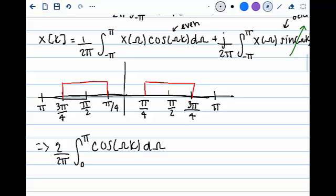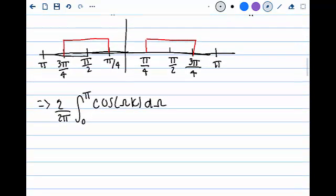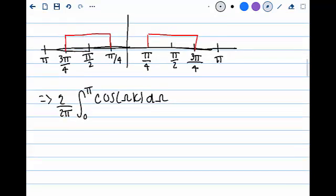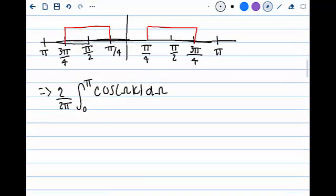So we will now plug in for our x of omega. Our x of omega is 0 everywhere but where it is pi over 4 to 3 pi over 4. Therefore, our integral changes to 1 over pi times the integral of pi over 4 to 3 pi over 4 cosine omega k d omega.